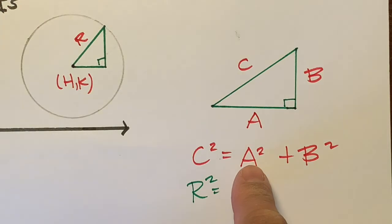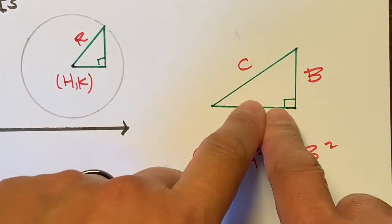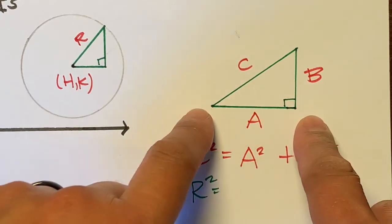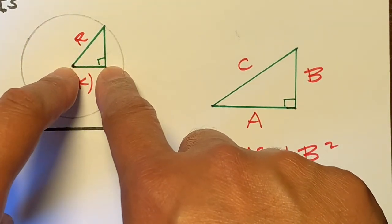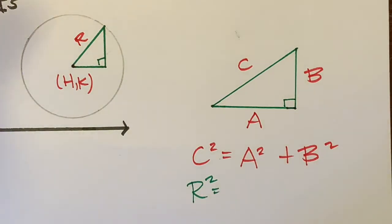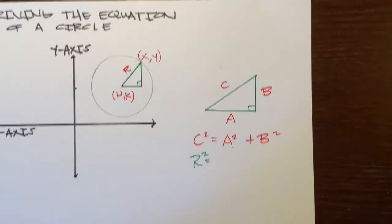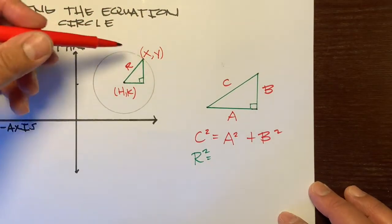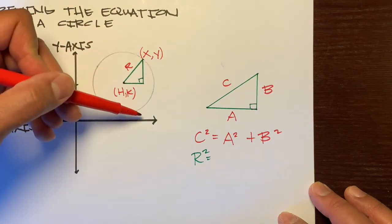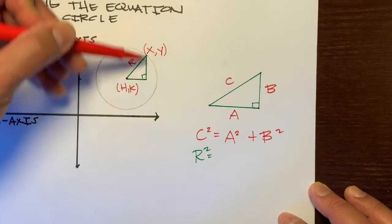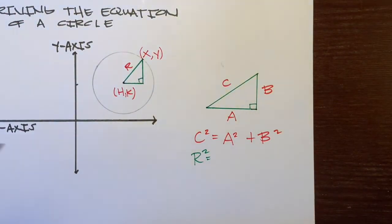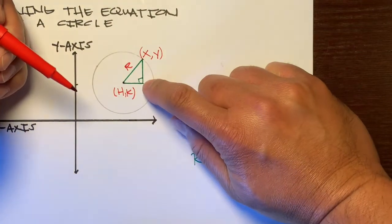Next thing is, what's the A? What's the distance? A is the distance horizontally. What's the distance horizontally from here to here? We really don't know the numerical values, so we're just going to call it X and Y. X is how far this point is from the Y axis or horizontally. And then the Y value is how far it vertically goes.